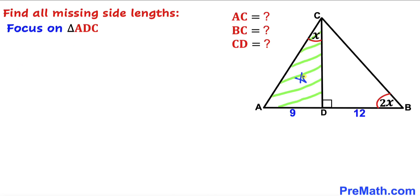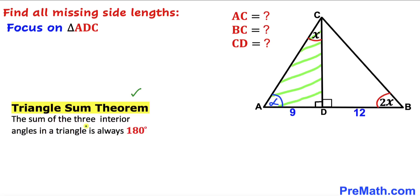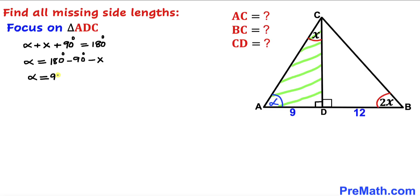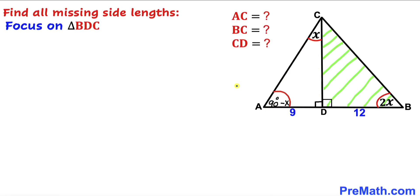Let's focus on triangle ADC. We know that this angle is 90 degrees. Let's assume this angle is alpha and recall the triangle angle sum theorem: the sum of three interior angles in a triangle is always 180 degrees. So angle alpha plus angle x plus 90 degrees equals 180 degrees. Moving x and 90 to the other side, angle alpha turns out to be 90 degrees minus x.